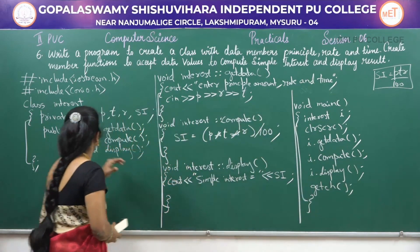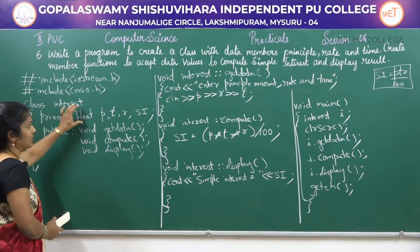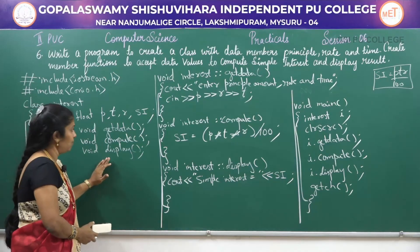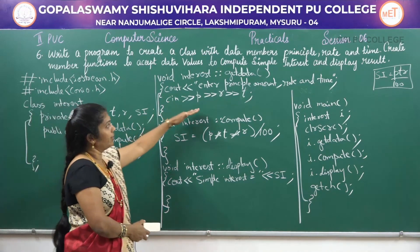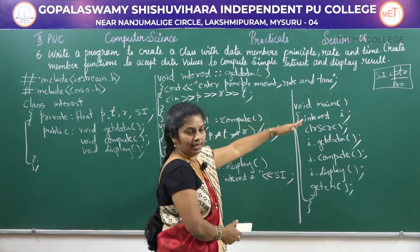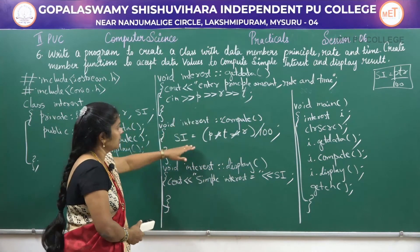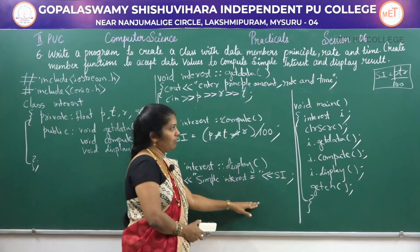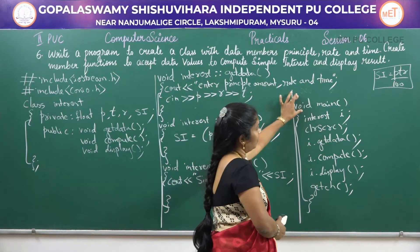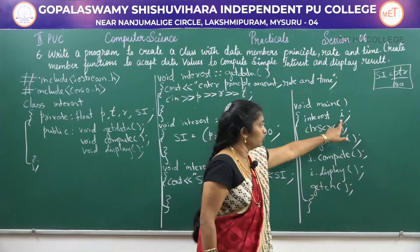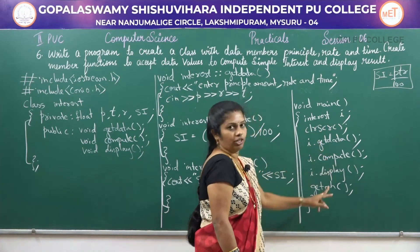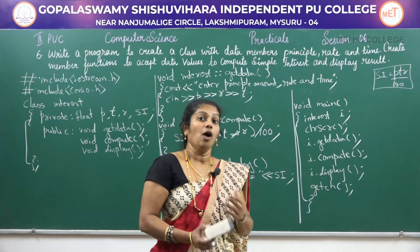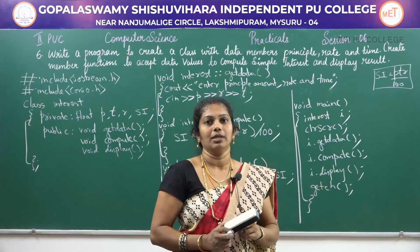Now let's recall: 'interest' is the class name. Declare the variables in float format. Then declare the functions: enter principal amount, rate, and time — input all the values. Then calculate using the compute function, and using the display function, display the result. Then in the main program, create an object and with the help of the object, call the functions one by one.